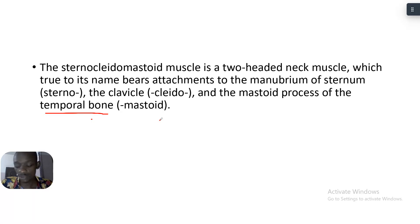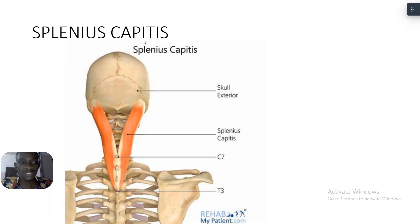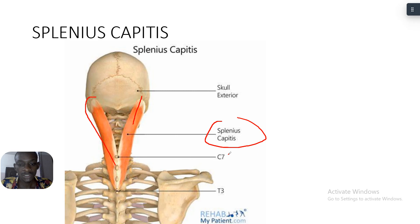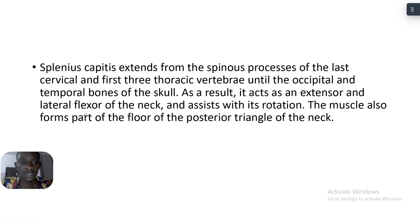Moving forward, the splenius capitis also attaches on the mastoid process. You can see the splenius capitis in the diagram — it is present on both sides. The nerve supply is C7 to T3.